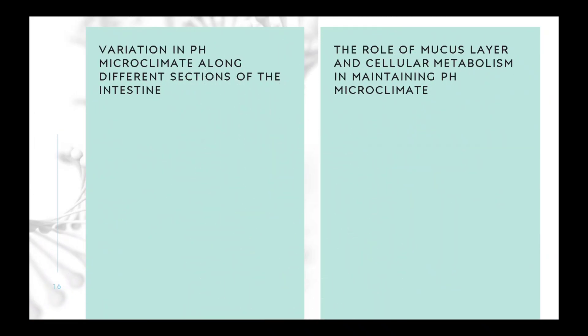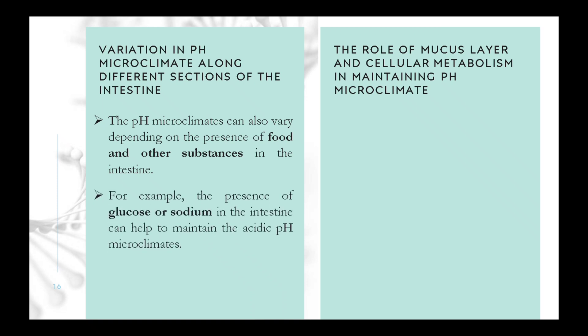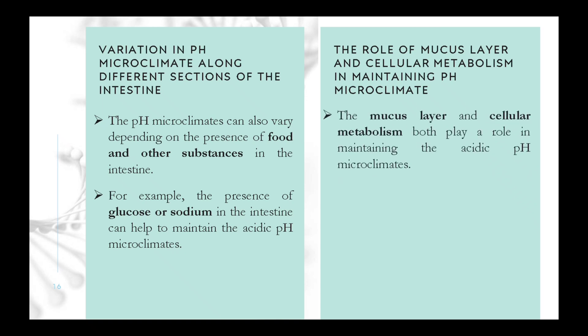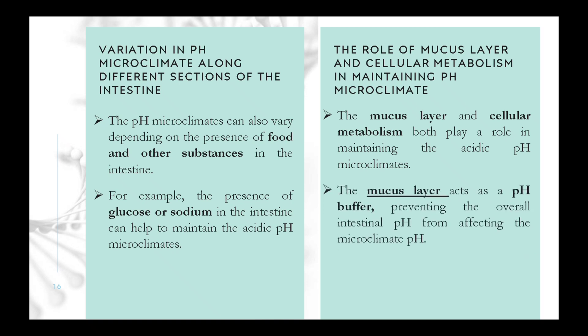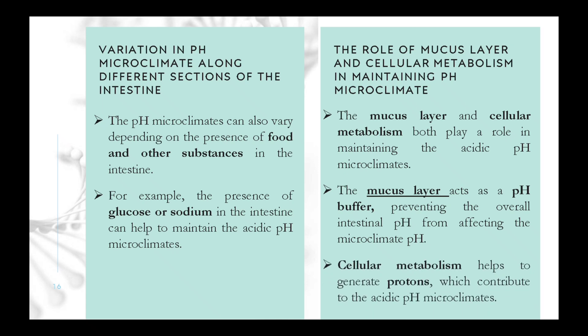Variation in pH microclimate along different sections of the intestine: the pH microclimates can also vary depending on the presence of food and other substances in the intestine. For example, the presence of glucose or sodium in the intestine can help to maintain the acidic pH microclimates. The mucus layer and cellular metabolism both play a role in maintaining the acidic pH microclimates. The mucus layer acts as a pH buffer, preventing the overall intestinal pH from affecting the microclimate pH. Cellular metabolism helps to generate protons, which contribute to the acidic pH microclimates.